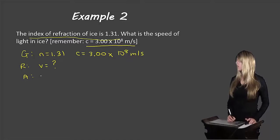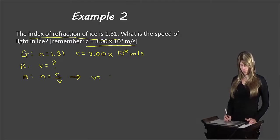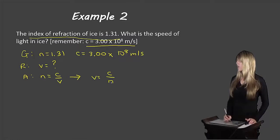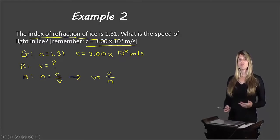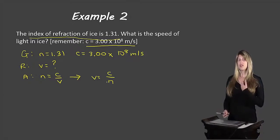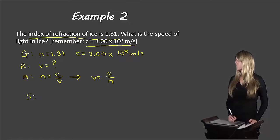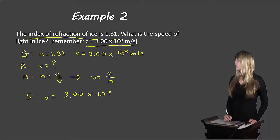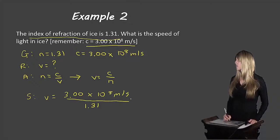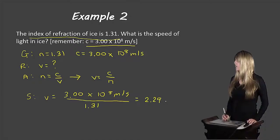Analysis — so we'll take a look at our equation: N equals C over V. Now we need to rearrange this equation so that we know what V is equal to. I'm not going to show you the steps to rearranging the equation, but if this is something you didn't learn in math last year or it's something you struggle with, come ask me in class tomorrow and we'll go through the steps to do this. So V equals C over N. So now let's substitute those values in: C equals 3.00 times 10 to the 8 meters per second divided by 1.33 — or sorry, 1.31. And if we do the math there, we end up with 2.29 times 10 to the 8 meters per second.